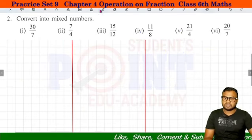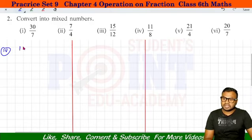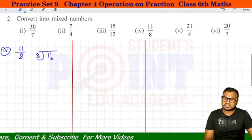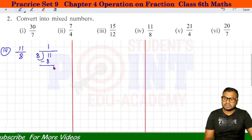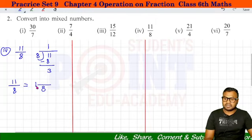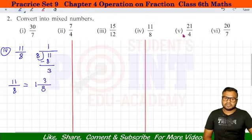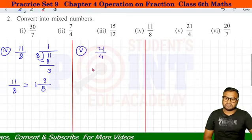Number 4: 11 by 8. Divide करेंगे — 8 once a 8, minus, बचेगा 3। तो 11 upon 8 Mixed Fraction में: answer आया 1, remainder 3, नीचे 8 — 1 and 3 by 8। Number 5: 21 divide by 4. 4 fives a 20, minus, बचेगा 1। Answer: 5 and 1 by 4।